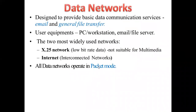A data network is basically a data transmitter — it might be an email or a general file transfer, a PDF document, or anything of that nature. In data networks, we have personal computers at the workstation to transfer files. The two networks widely used in data networking are the X.25 network and the internet. This X.25 is actually low bit rate data.